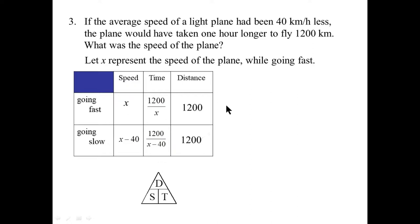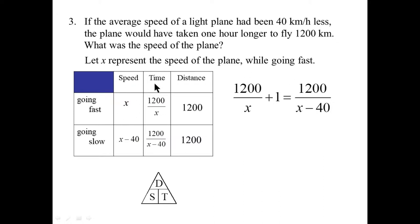Now we have to build an equation. The plane would have taken longer to fly slower, so we compare their times. The fast time, 1,200 over x, is smaller. We add 1 to it — because it says it would have taken 1 hour longer — and equal that to the bigger number, the slow time 1,200 over (x minus 40). So: 1,200 over x, plus 1, equals 1,200 over (x minus 40). This equation is by far the hardest part of this word problem.